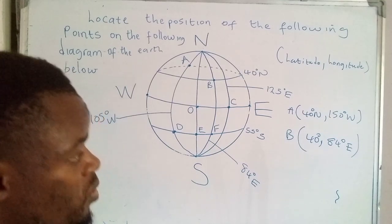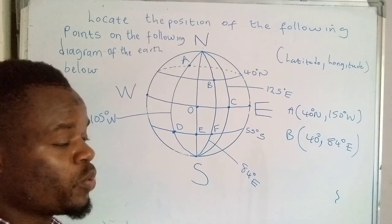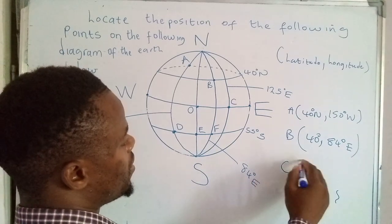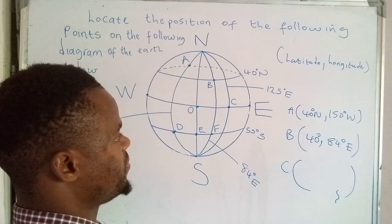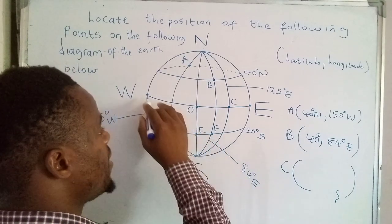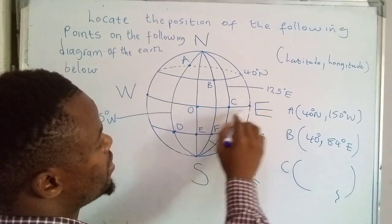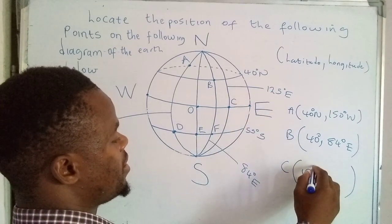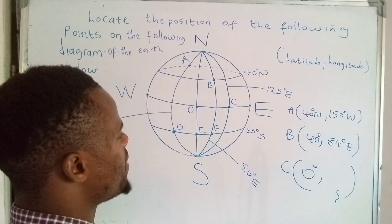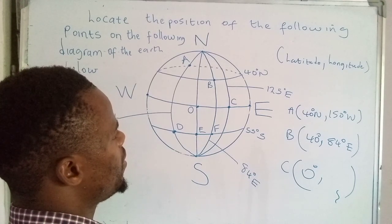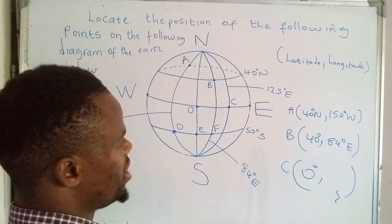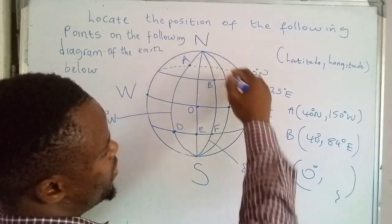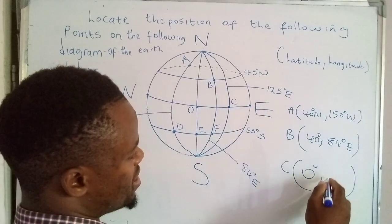And so if you still don't get it, you'll get it as we progress through the lesson. Let's do C. What are the coordinates? So with C, we start with the latitude. So as you can see, this is an equator. So an equator has zero degrees. And then we check for the degree of the longitude where C is sitting. So it's on 125 degrees east.